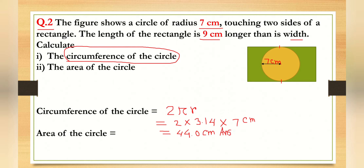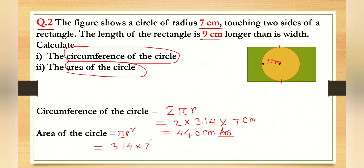Now for number two, the area of the circle. The formula is πr². You must remember that: πr². Here π is 3.14 and r is seven, so we calculate seven squared, then multiply. That gives us 154 square centimeters. That is the area of the circle — our second answer.